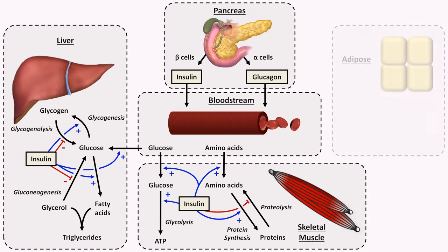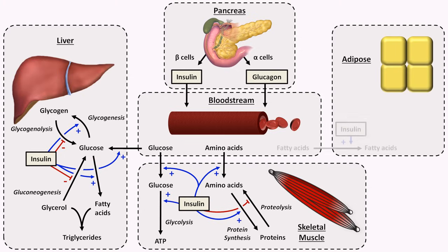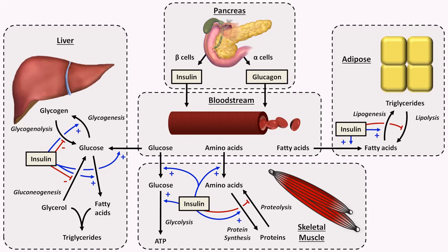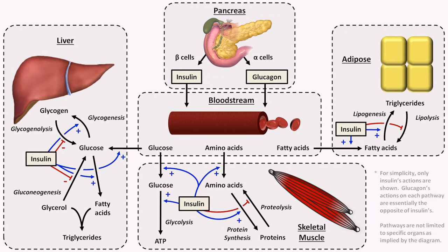Finally, insulin acts in adipose tissue, where it stimulates uptake of fatty acids, which get converted into triglycerides that can then be used as long-term energy storage. Each of these processes are reversible, and wherever insulin stimulates a process, it generally inhibits its opposite. For example, in adipose, insulin stimulates lipogenesis and inhibits lipolysis. For simplicity, I've only discussed insulin's actions here — glucagon's actions on each pathway are essentially the opposite.